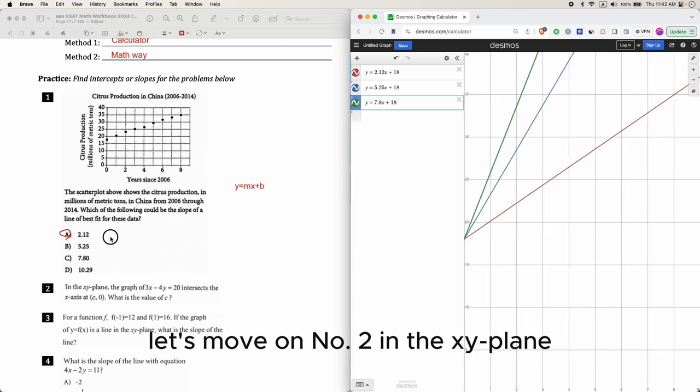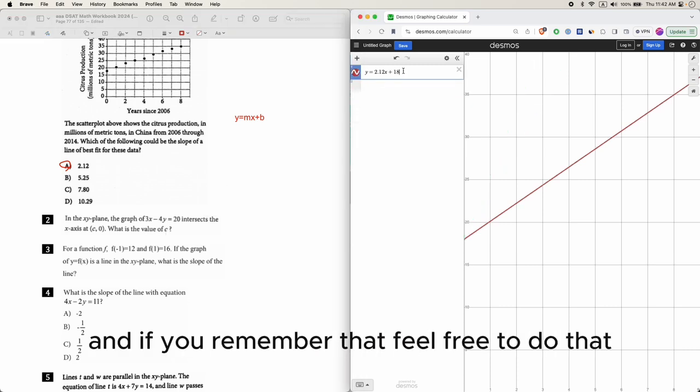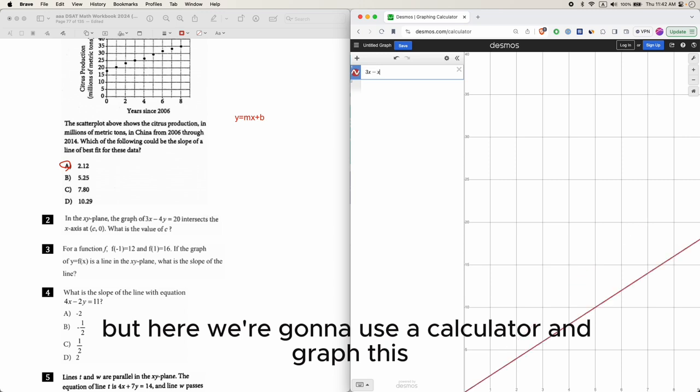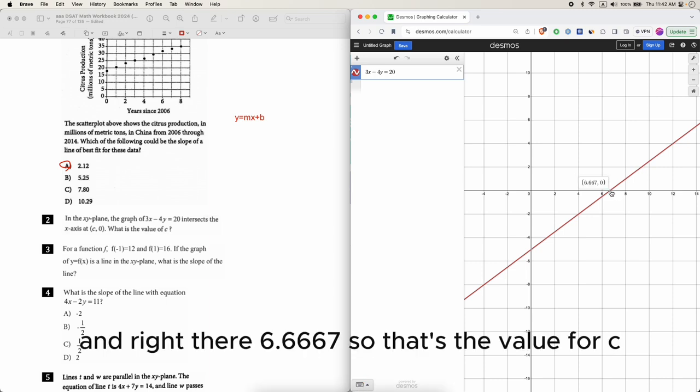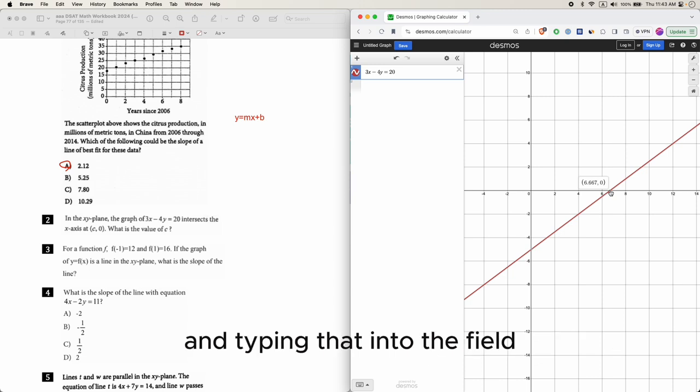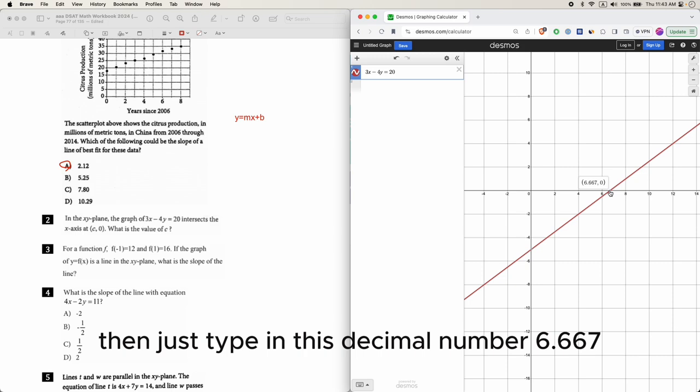Number 2. In the xy plane, the graph intersects the x-axis at this, what its value is C. There's a math way that you can do it. And if you remember that, feel free to do that. But here we're going to use a calculator and graph this and take a look. And C, 0 means something, 0. Something, 0. So it's the x-axis. So it's this point here. Right there, 6.6667. So that's the value for C. And typing that into the field for entering your grid in would be the right answer. If you know how to convert that to a fraction, that's cool. If not, then just type in this decimal number, 6.667.